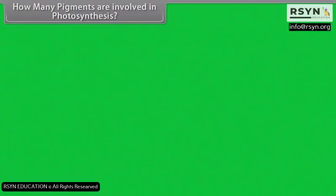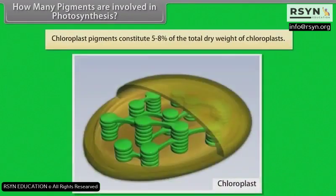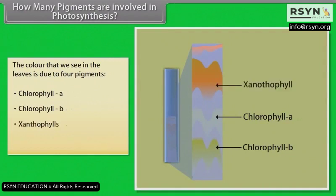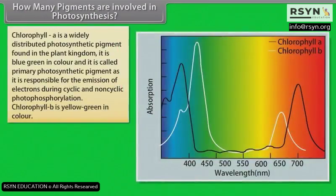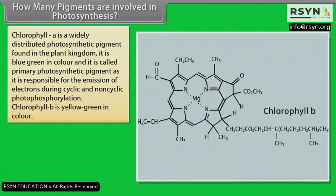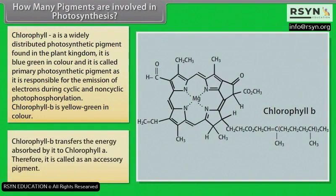Chloroplast pigments constitute 5–8% of the total dry weight of chloroplasts. The colour we see in leaves is due to four pigments: Chlorophyll A, Chlorophyll B, Xanthophylls, and Carotenoids. Chlorophyll A is blue-green in colour and is the primary photosynthetic pigment, responsible for the emission of electrons during cyclic and non-cyclic photophosphorylation. Chlorophyll B is yellow-green in colour and transfers the energy it absorbs to Chlorophyll A, making it an accessory pigment.